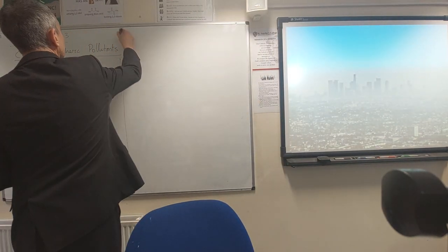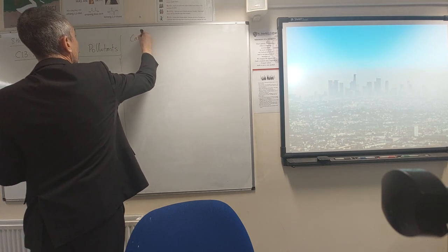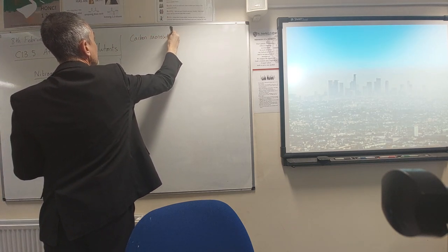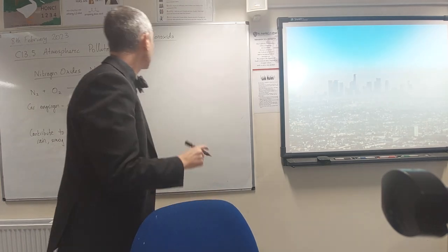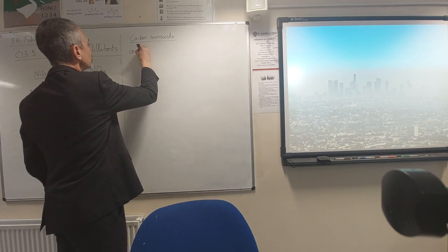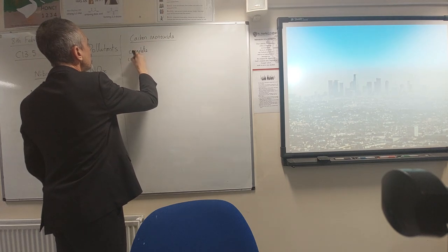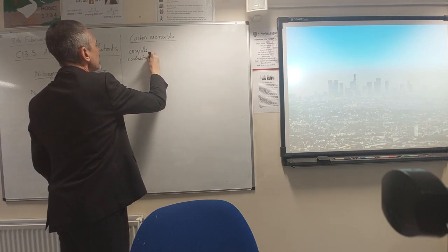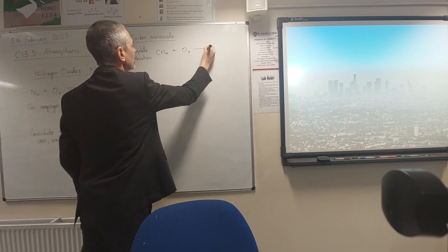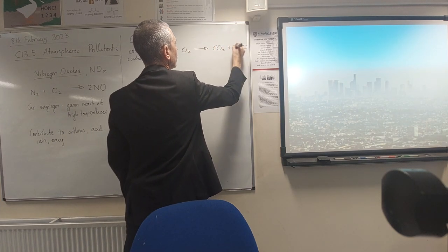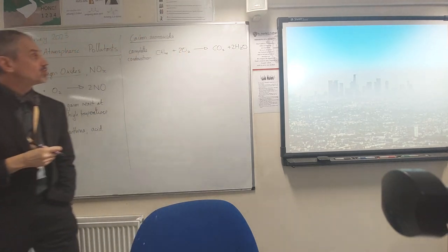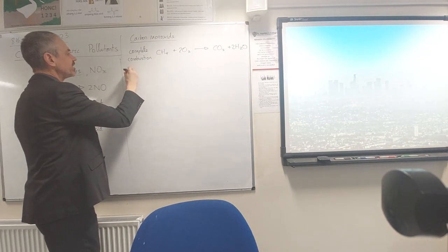The next pollutant to talk about is carbon monoxide. You'll remember from topic nine on crude oil and fuels we talked about complete and incomplete combustion. With complete combustion, if methane burns in oxygen then we make carbon dioxide and water.